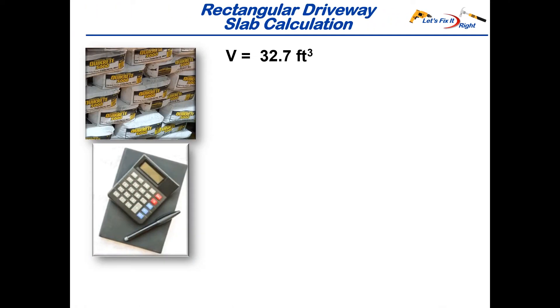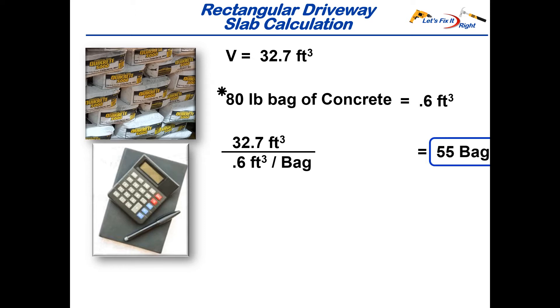In this case, the label on the quick-create bag shows that each 80-pound bag provides 0.6 cubic feet of concrete. So dividing our 32.7 cubic feet of concrete by 0.6 cubic feet per bag gives us 55 bags of 80-pound quick-create bags required for the job.